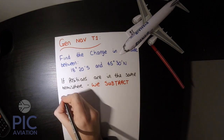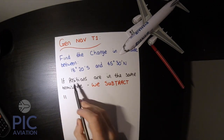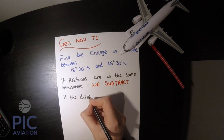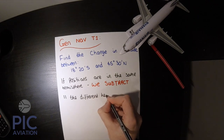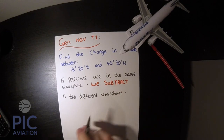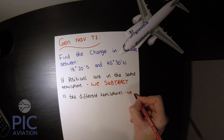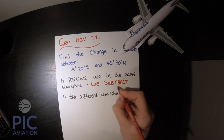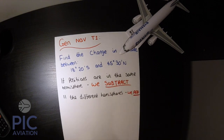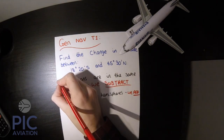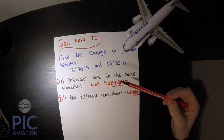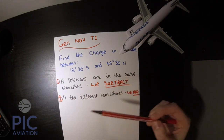Contrarily, if positions are in different hemispheres, we are going to add. So if we are in the same hemisphere, we subtract, and if they are in different hemispheres, we add them. We can call this rule 1 and rule 2 when calculating both changes in latitude and also changes in longitude, which we'll come onto in a later video.